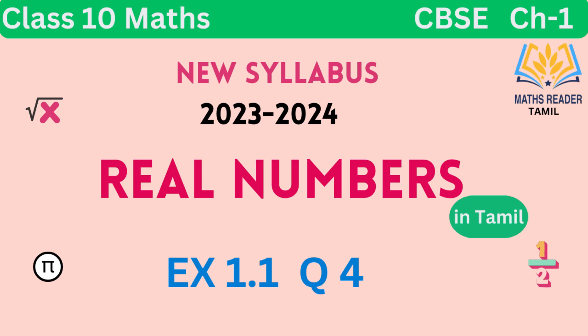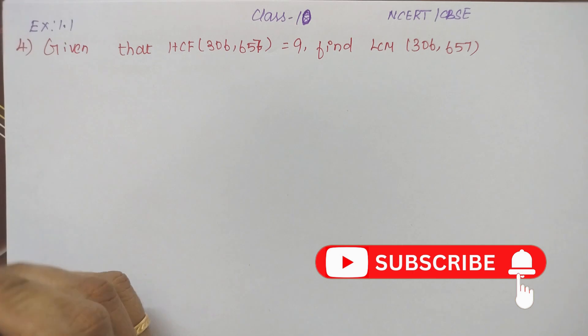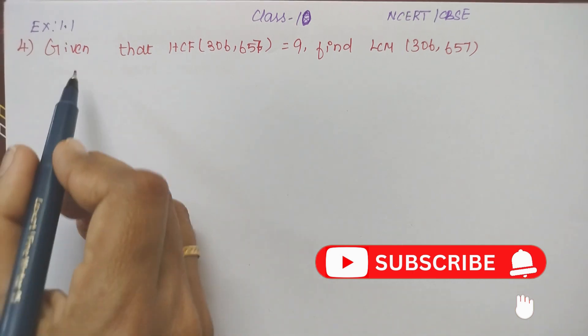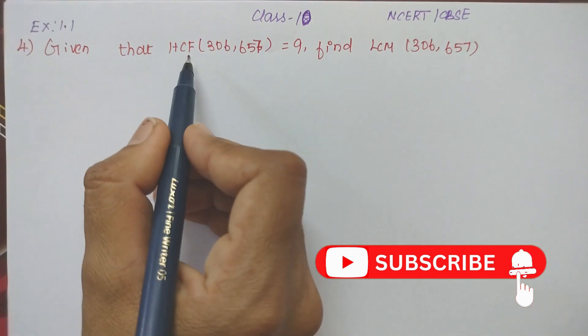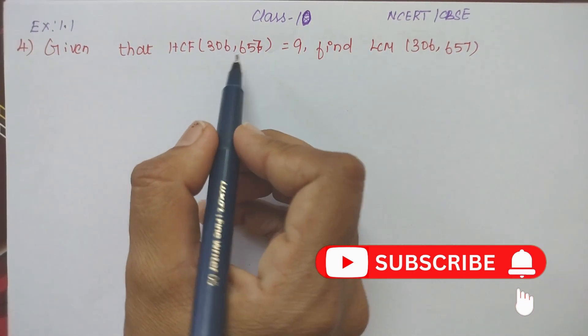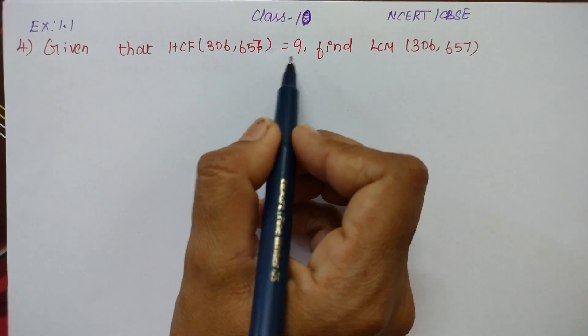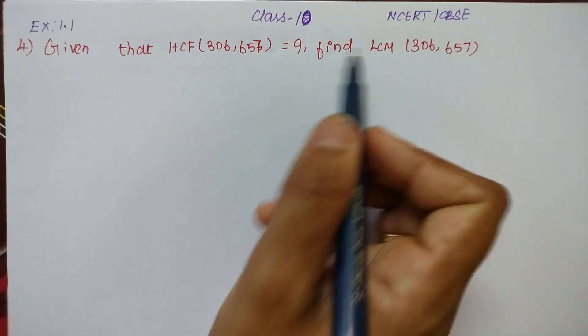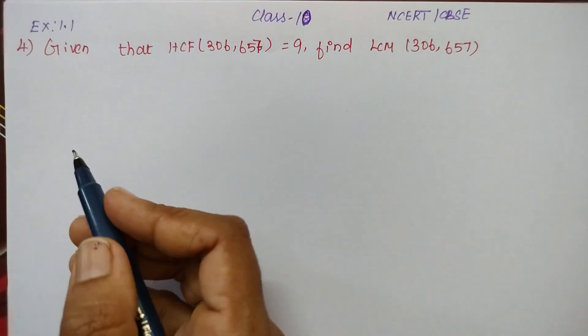Hello my dear students, welcome to the channel. In Exercise 1.1, we took question number 4. Given that HCF of 306 and 657 equals 9, find LCM.